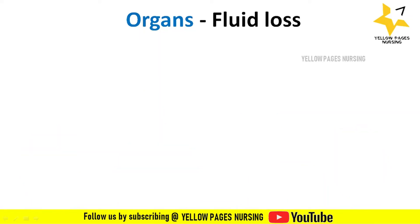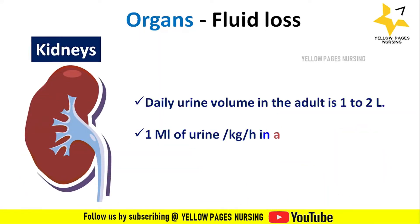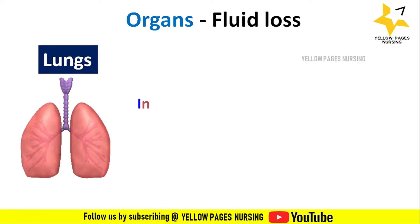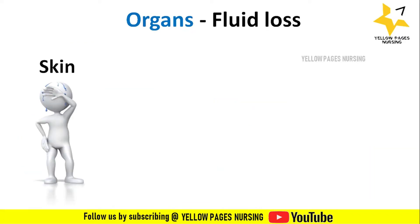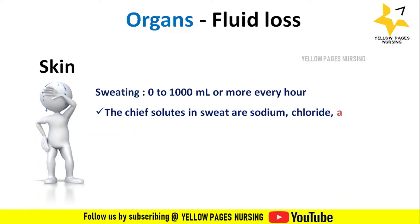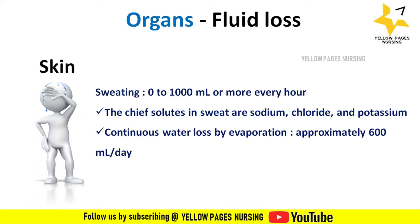Regarding kidneys, daily urine volume in adults ranges between 1 to 2 liters, approximately 1 ml per kg per hour in all age groups. The lungs eliminate water vapor at approximately 300 ml per day, with greater loss at increased respiratory rate or in a dry climate. Fluid loss through skin by sweating ranges from 0 to 1,000 ml or more per hour; chief solutes in sweat are sodium chloride and potassium.